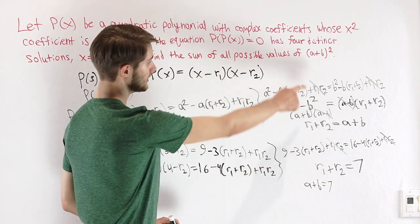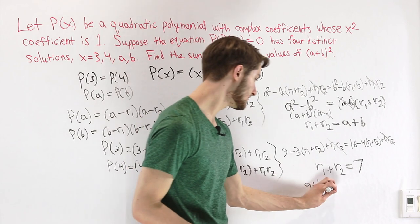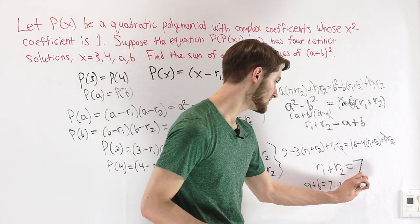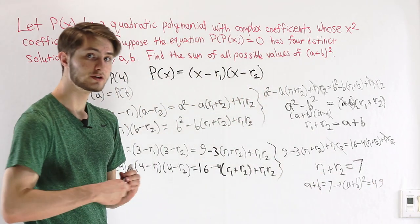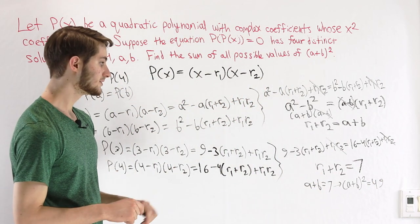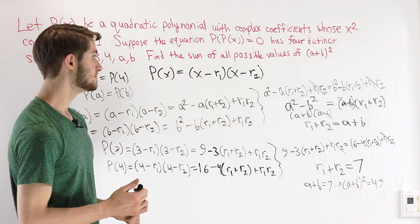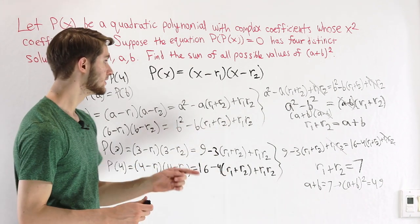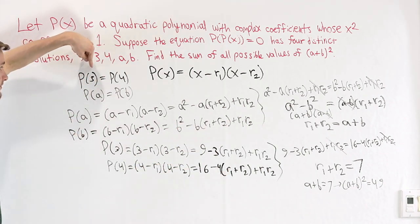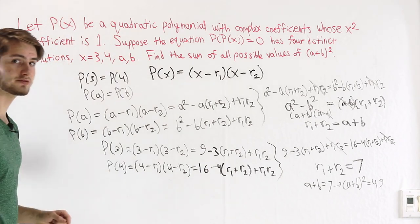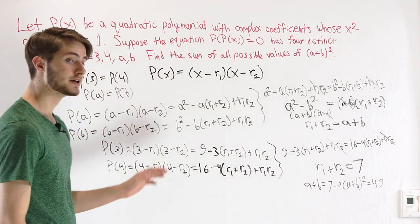Therefore, A plus B squared must equal 49. That is the value of A plus b squared for the situation where p of 3 equals p of 4 and p of A equals p of B.